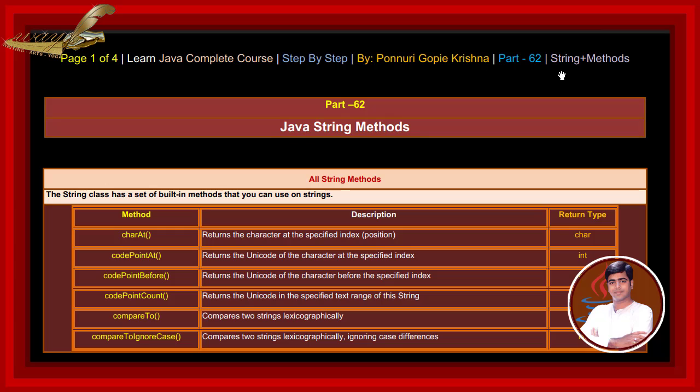charAt method returns a character at the specified index position. codePointAt method returns a unicode of the character at the specified index. codePointBefore method returns a unicode of the character before the specified index. codePointCount method returns a unicode in the specified text string of the string.